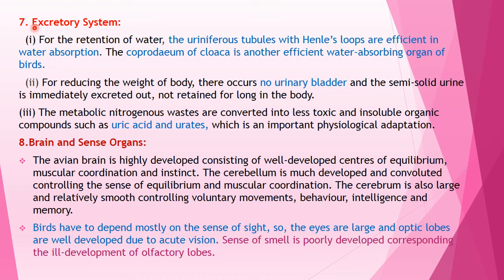The seventh anatomical adaptation is related to the excretory system. For retention of water, the uriniferous tubules with the loop of Henle are efficient in water absorption. The coprodeum of the cloaca is another efficient organ that absorbs water. To reduce body weight, the urinary bladder is absent, and the excretory product is sent out in the form of semi-solid pellets of uric acid and urates. The absence of a urinary bladder and conversion of nitrogenous waste into insoluble uric acid and urates represents an important physiological adaptation.